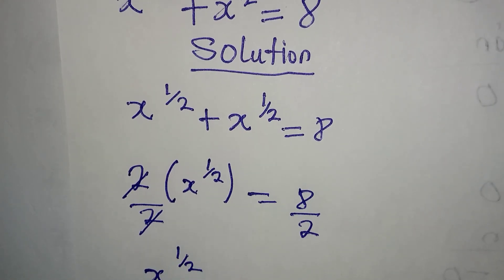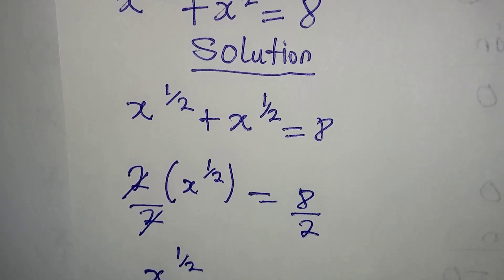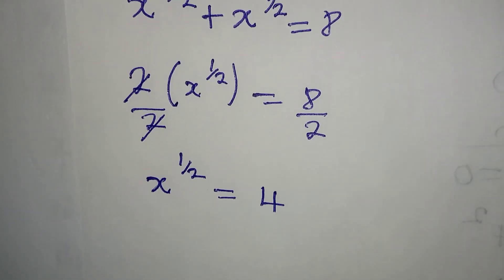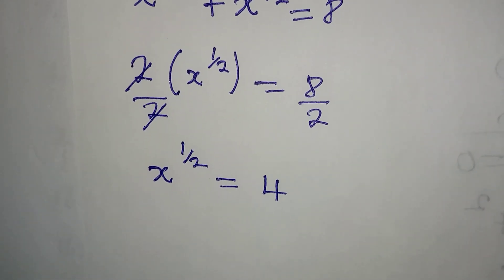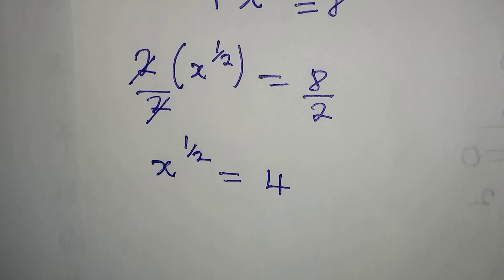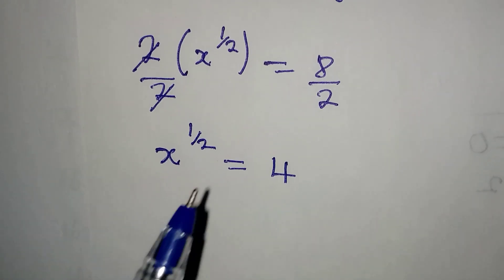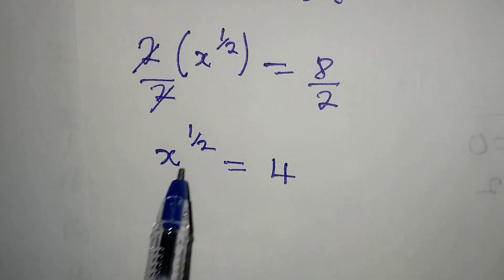And then x to the power of 1 over 2 is actually equal to 4. Now from here, what should I do? We want to remove this power from here and we can do that by multiplying the power by its own reciprocal.